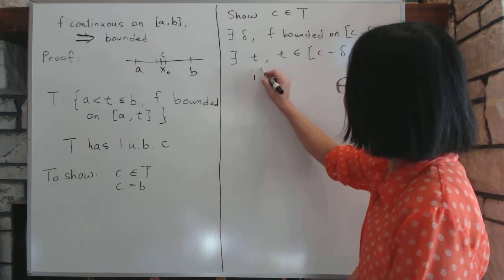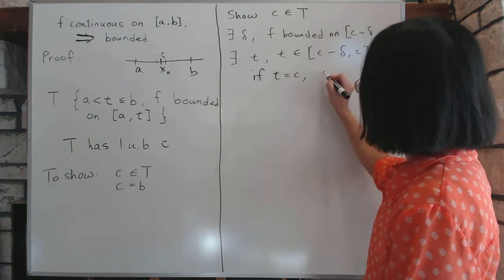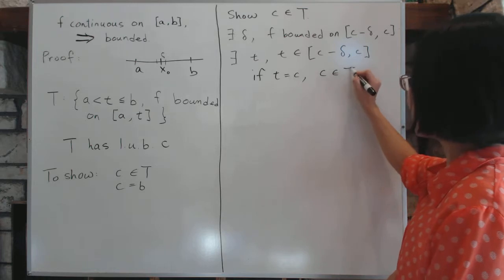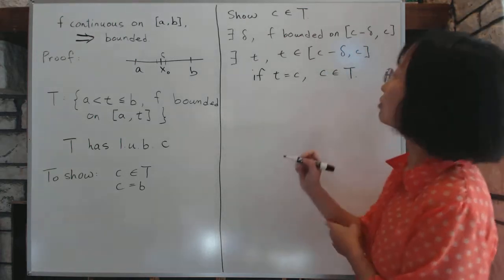Now, if T equals to C, then obviously C is a member of T. Well, what if we are not so lucky and T doesn't equal to C?